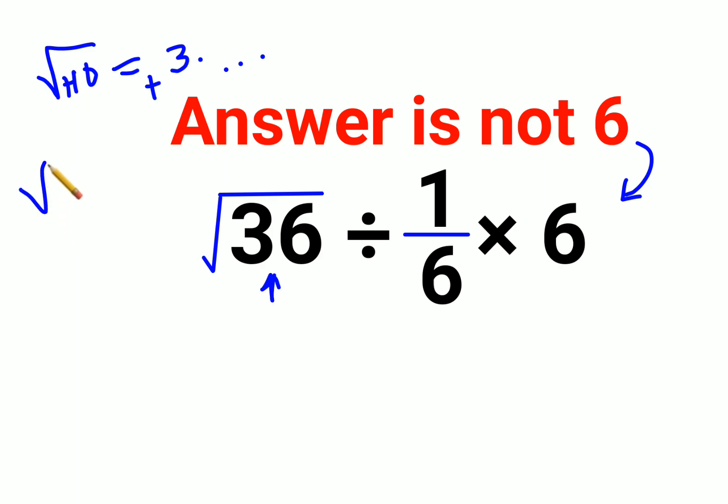So now you might be wondering when will the answer be plus minus. If you had something like x squared equals 36, so we took square root on both sides, at that time whenever there is a variable in picture that time the plus minus sign will appear.